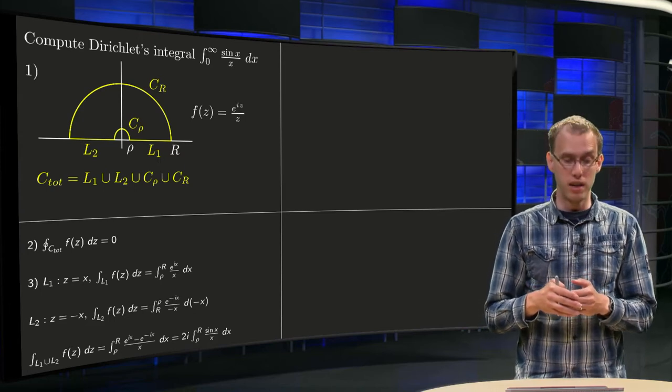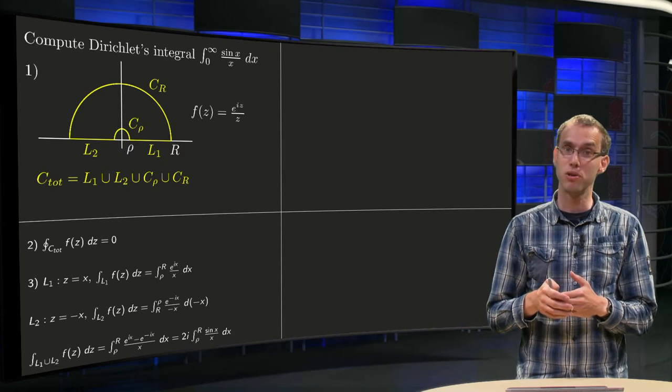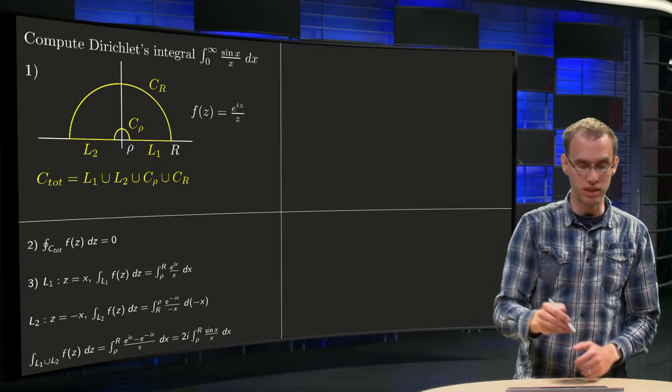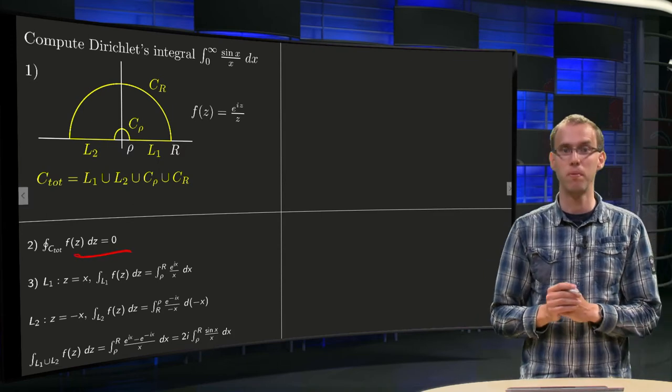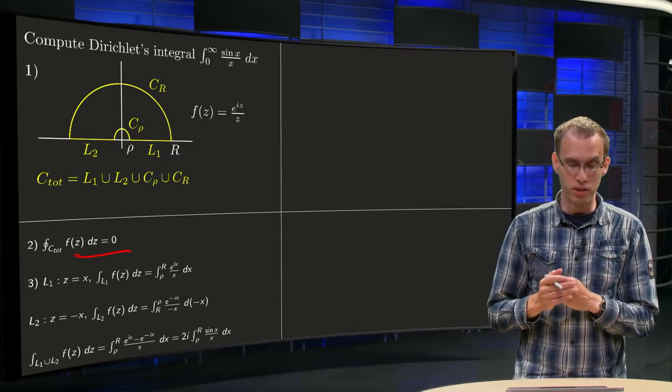First of all, the second step is easy. f(z) is analytic on and inside the contour C_tot, which means that the total integral equals zero. It is either Cauchy-Goursat theorem or the theorem of residues.